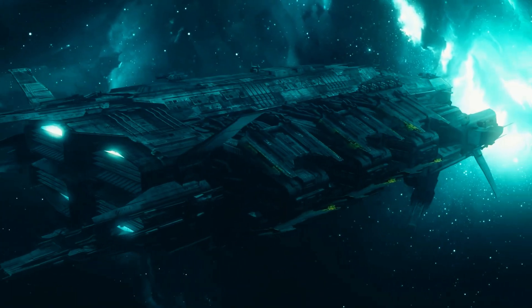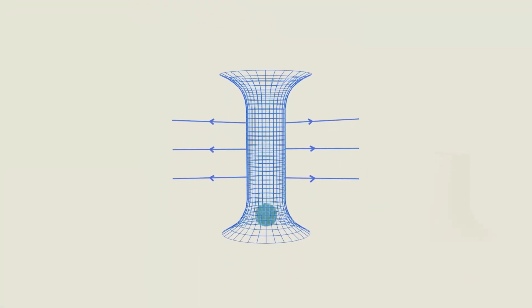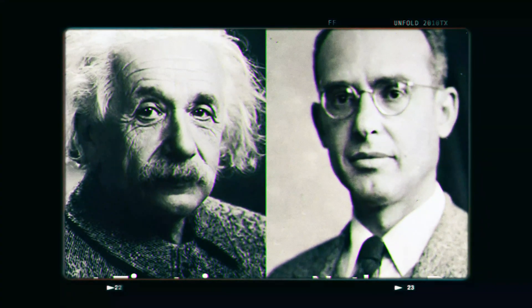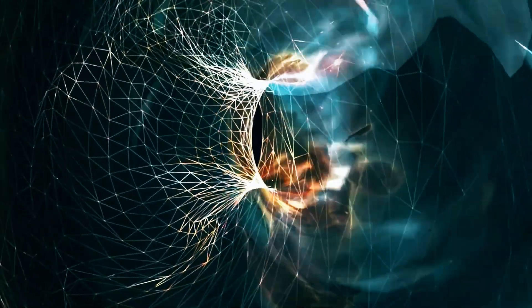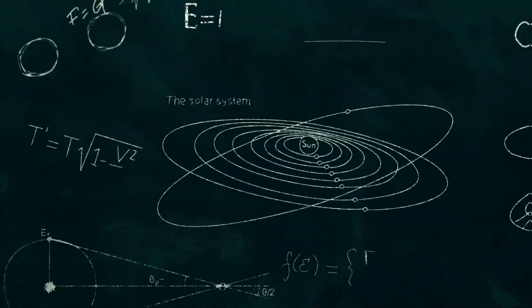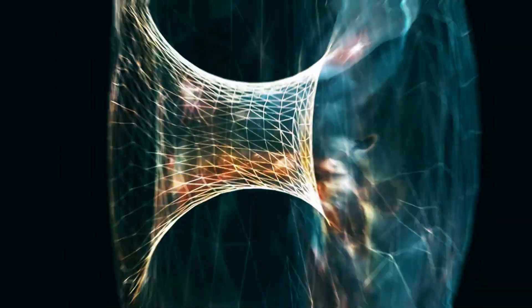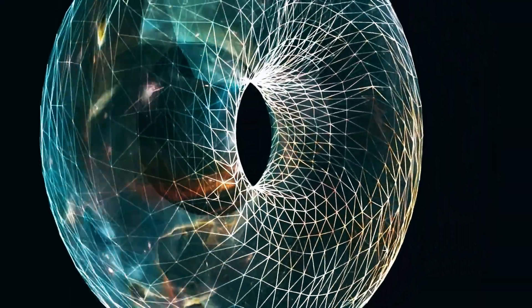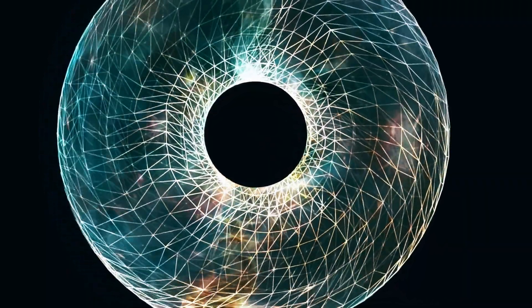Another possibility is wormholes. Theorized tunnels through spacetime that could connect two distant points almost instantly, first imagined by Ludwig Flamm in 1916 and later expanded upon by Albert Einstein and Nathan Rosen. These exotic objects arise from the extreme curvature of spacetime, predicted by general relativity. While the math supports the possibility of their existence, no one has ever observed a traversable wormhole. Most theoretical models of traversable wormholes require exotic matter with negative energy density to remain open, presenting a significant hurdle.